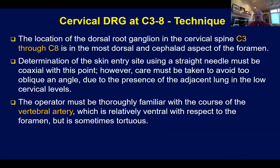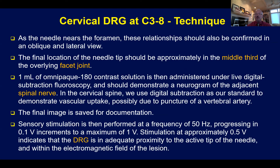The location of the DRG in C3 through C8 is the most dorsal and cephalad aspect of the foramen. A straight needle must be used coaxially — that is, a gun barrel or tunnel view looking down the needle from the top of the shaft to the tip. We must be thoroughly familiar with the location of the vertebral artery. We perform anterior-posterior, lateral, and lateral oblique views to confirm that the needle is situated in the cephalad and dorsal-most area of the intervertebral foramen. On AP view, we should be at about the middle third of the overlying facet.